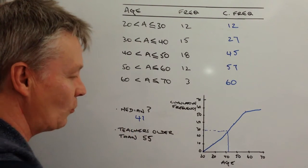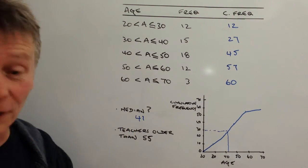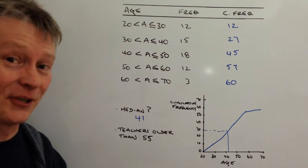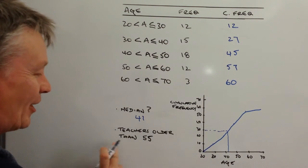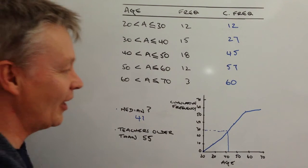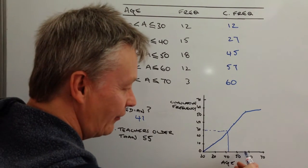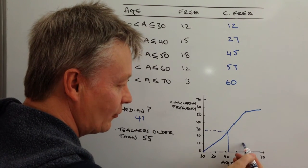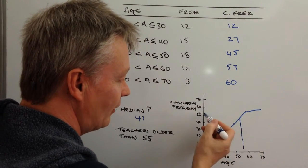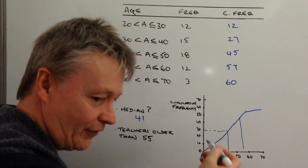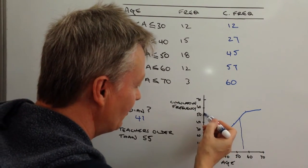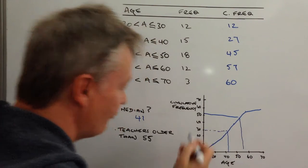And that will give you actually a median age of 41, although it doesn't look like it on mine, but 41 it is according to the answers. Teachers older than 55: when we look at teachers that are older than 55, we take the 55 group here and then we plot that across, and that's going to give us round about, according to our information, 51.